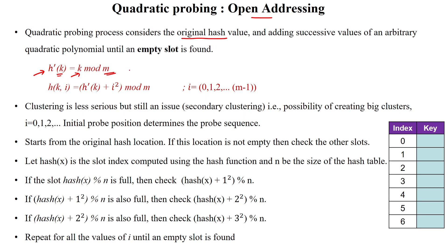If an empty slot is not found at the original hash location, we add successive values of an arbitrary quadratic polynomial until an empty slot is found in the hash table. We add the quadratic polynomial term to the already-found hash key and apply mod m again. This is repeated until an empty bucket is found.